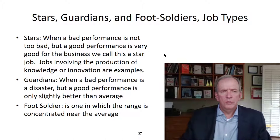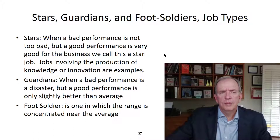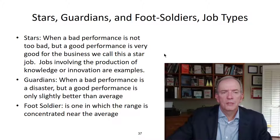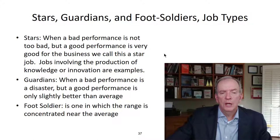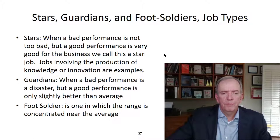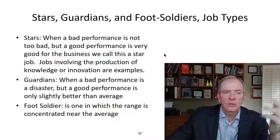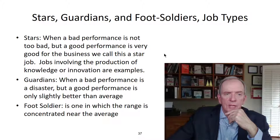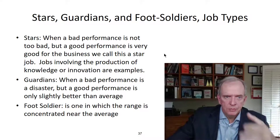The book I used to use discussed stars, guardians, and foot soldiers as job types. A star job is when a bad performance isn't too bad, but a good performance is fantastic. A guardian job is when a bad performance is a disaster, but a good job is only expected — slightly better than average. A foot soldier is someone who can't really sink the company but also can't make it — they're a required component to keep things moving forward. A tradesperson on a project would be an example of a foot soldier.